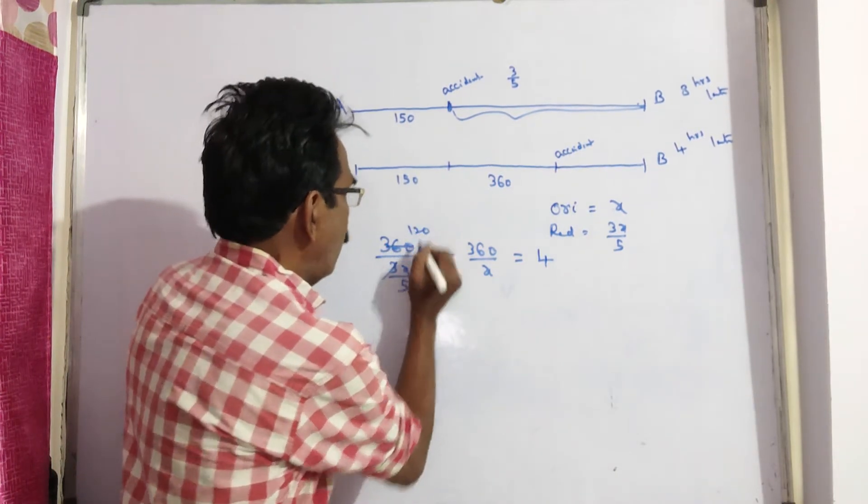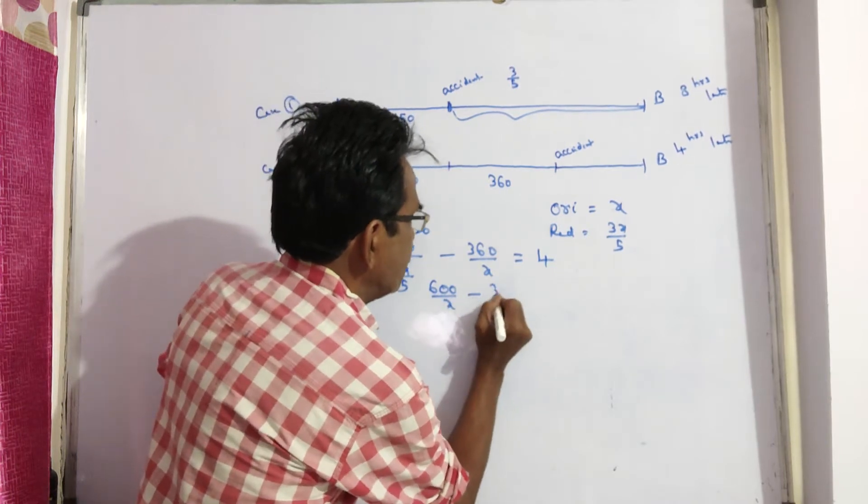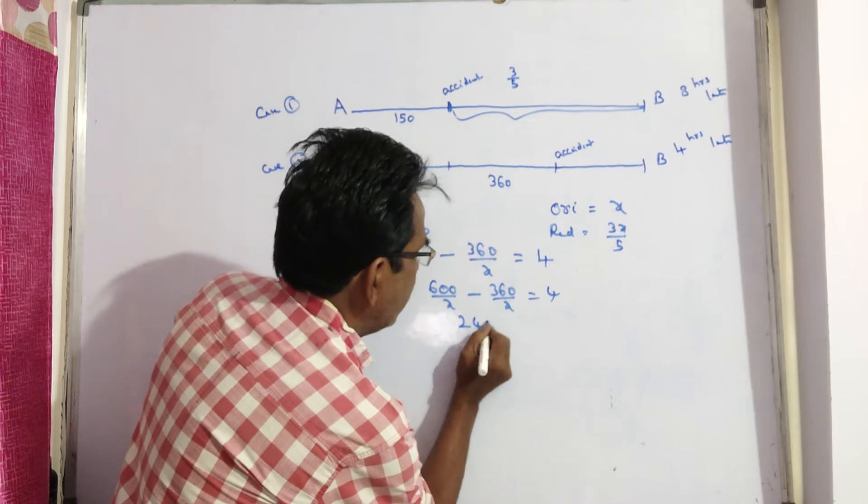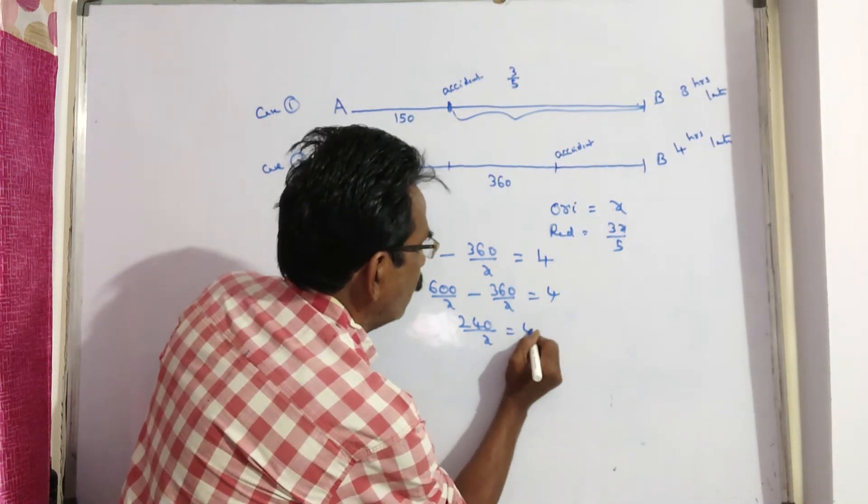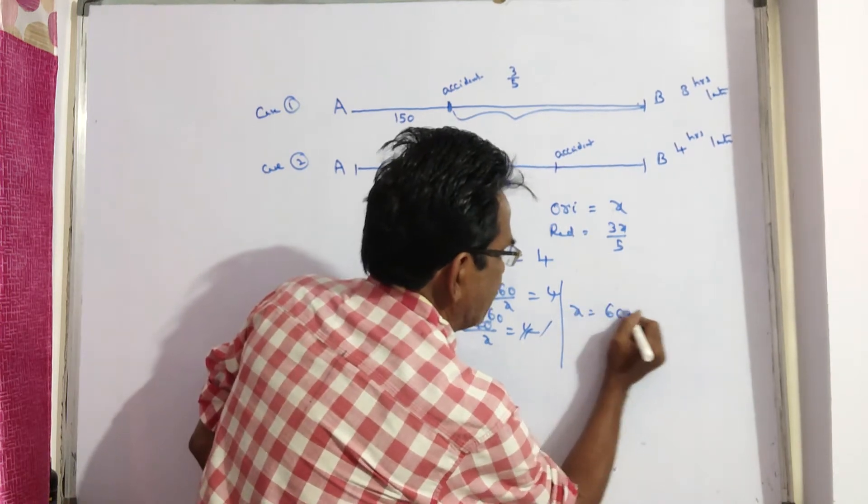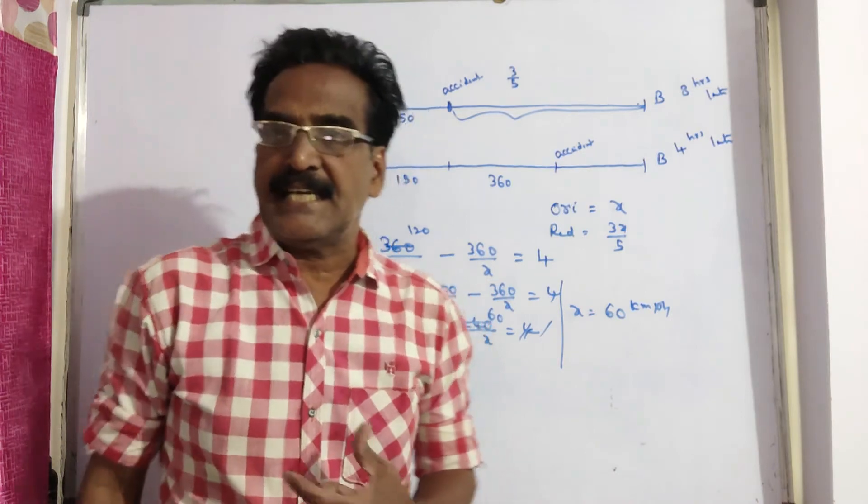120 into 5, 600 by x minus 360 by x is equal to 4. 240 by x is equal to 4. So x is equal to 60 km, right friends? X is equal to 60 km. So speed of the train is 60 km per hour.